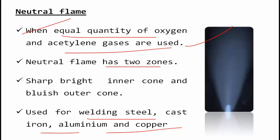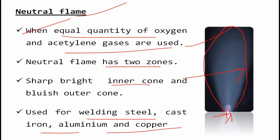The neutral flame has two zones: the sharp brighter inner cone and the bluish outer cone. When we use equal proportions of gas, we get the neutral flame. This type of flame is preferred for welding cast iron, aluminium, and copper.